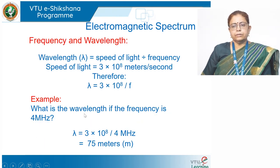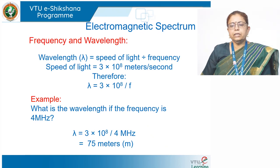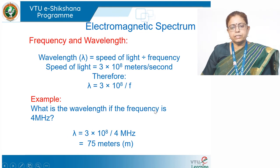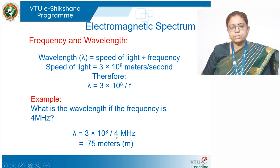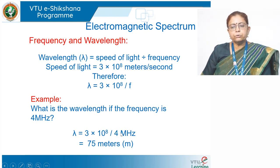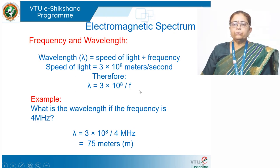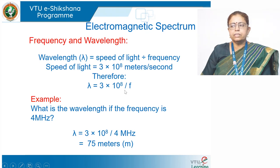The relation between frequency and wavelength is through the speed of light. For example, if you take the wavelength of a frequency of 4 megahertz: λ = C/F = (3 × 10⁸) / (4 × 10⁶) = 75 meters. You can calculate the wavelength of any frequency given in the electromagnetic spectrum this way.